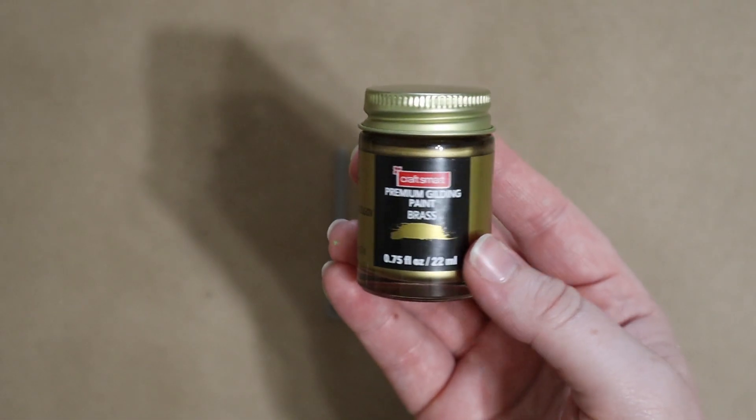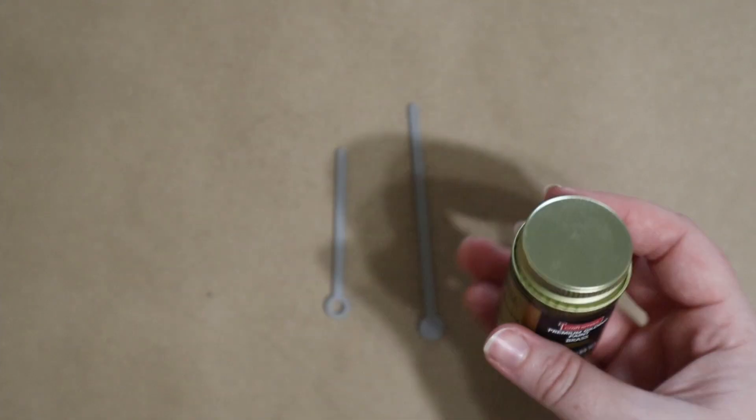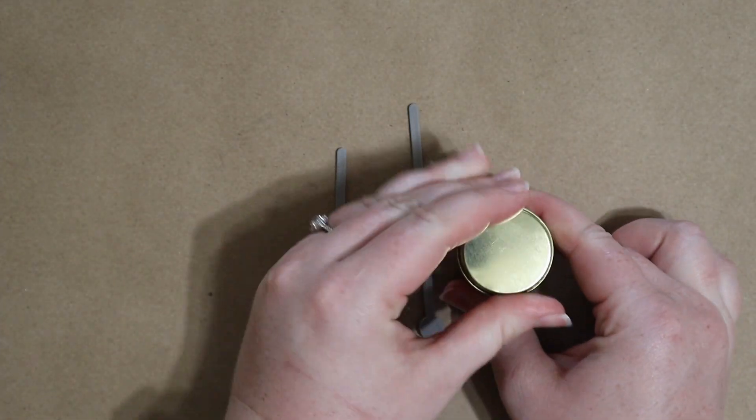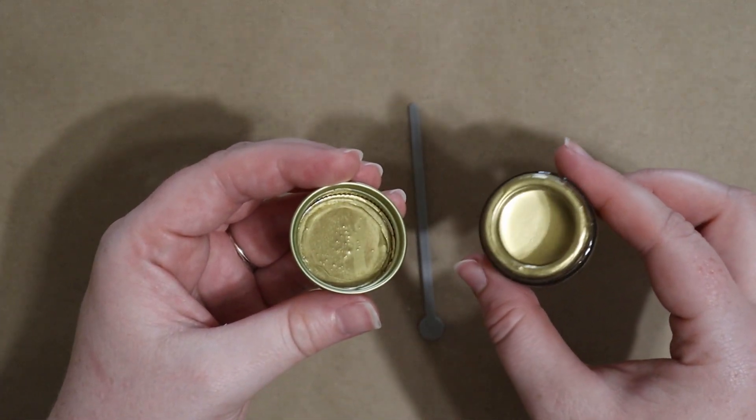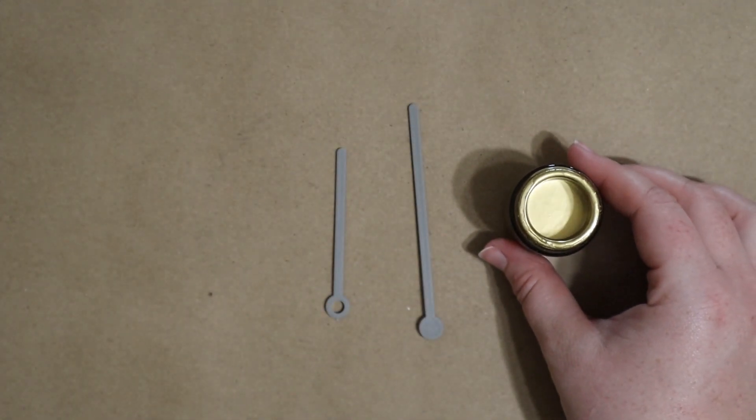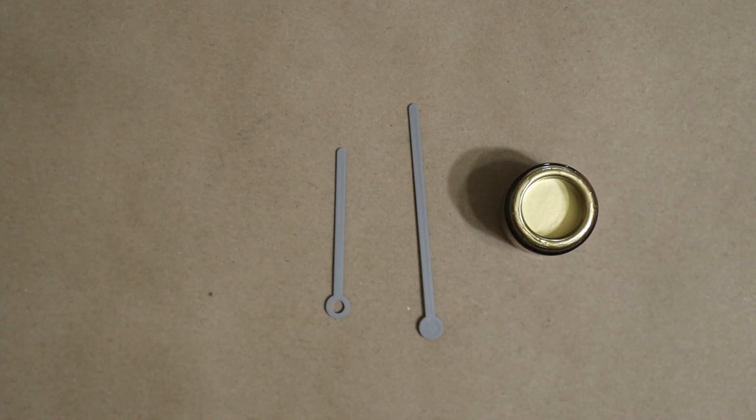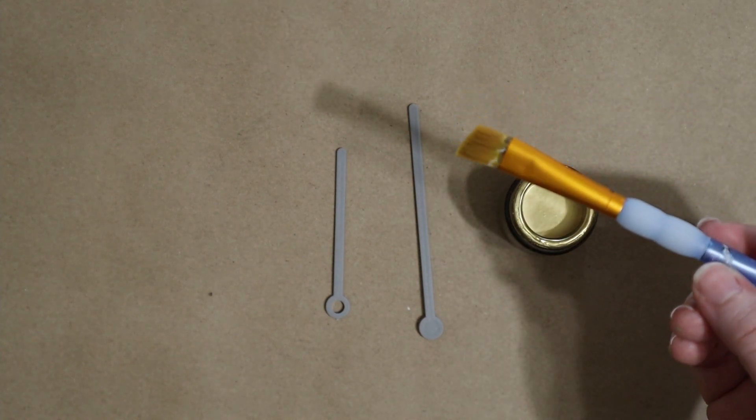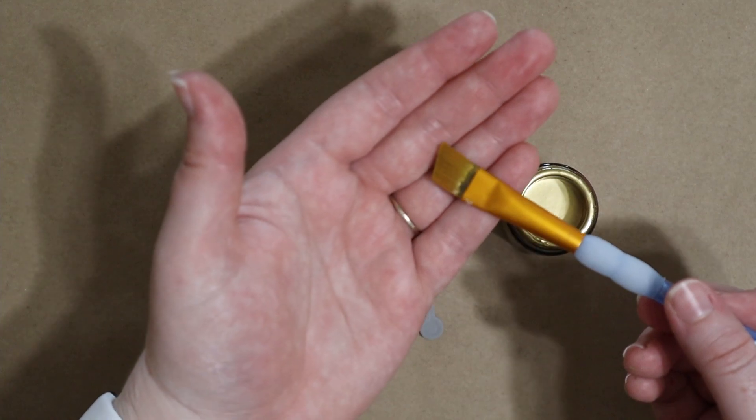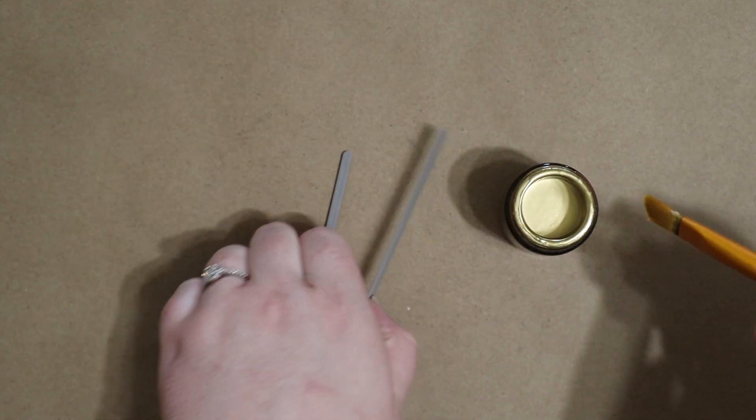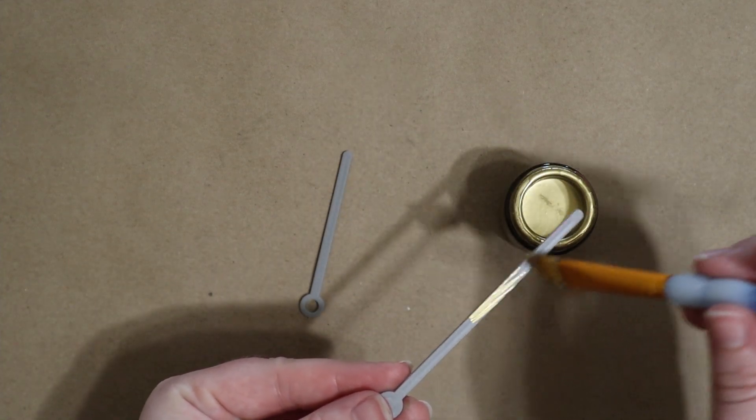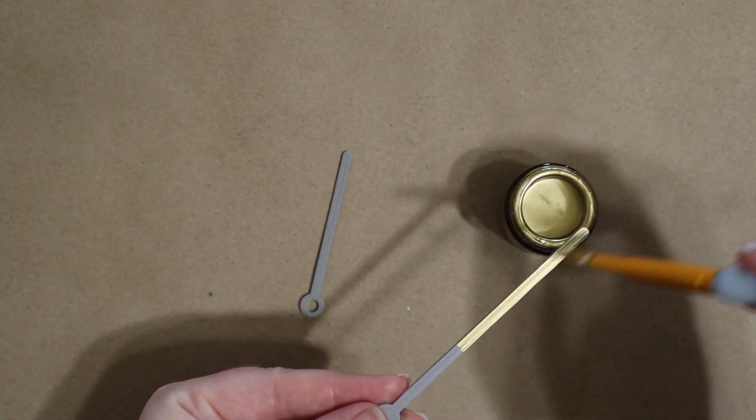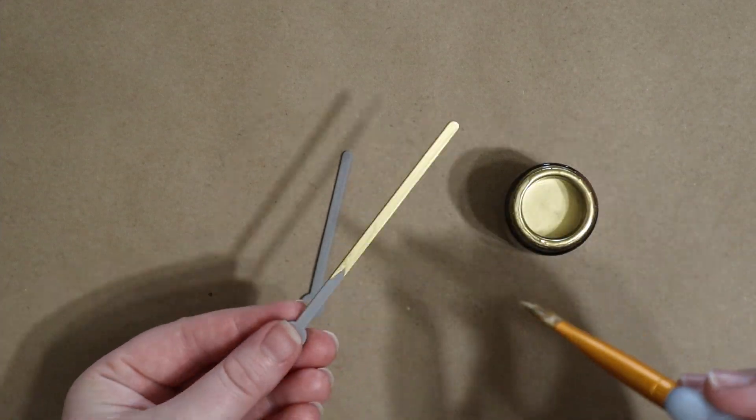Because I wanted really flashy hands on my clock, I decided to go with this brass gilding paint. You could use another color or even leave them gray if you want to. Looking back, it would have been easier to use spray paint consistency-wise, but the end result was really beautiful. As you're painting, make sure you get in all the little nooks and crannies and do a second layer if your paint needs it.